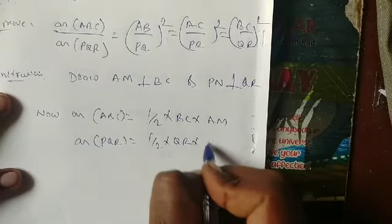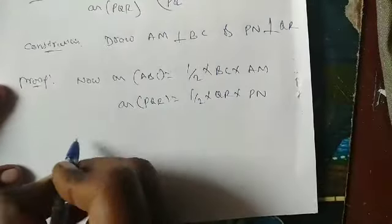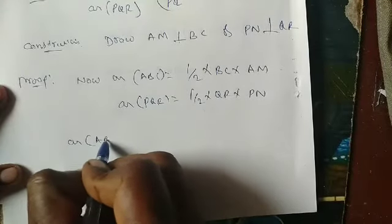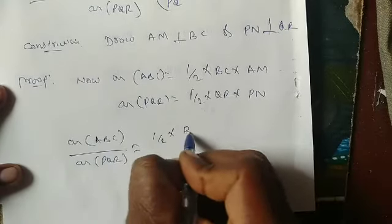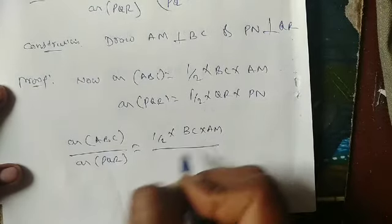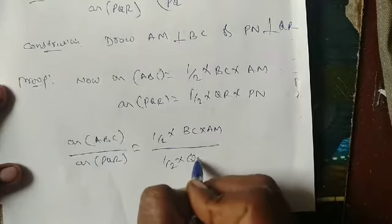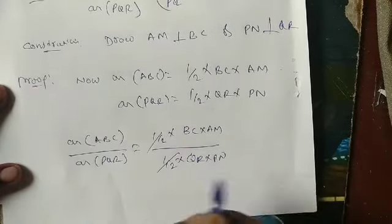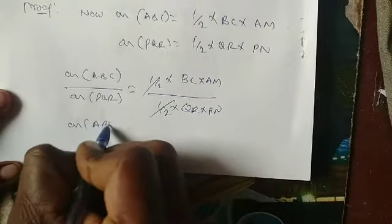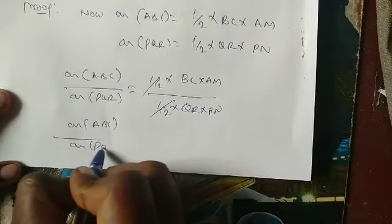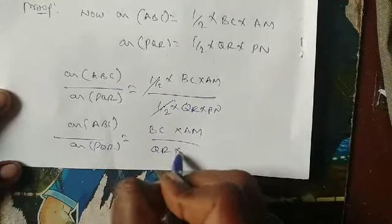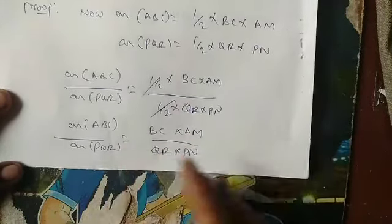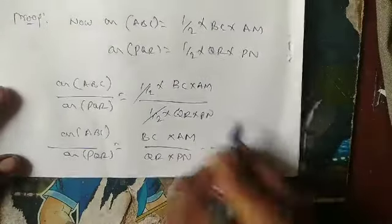Area of ABC divided by area of PQR equals (½ × BC × AM) divided by (½ × QR × PN). The one-halves get cancelled. What remains is: area of ABC divided by area of PQR is equal to BC × AM divided by QR × PN.